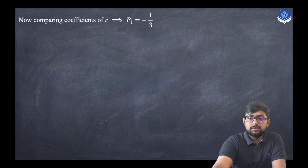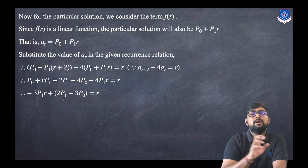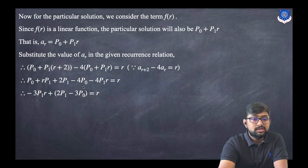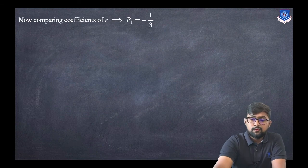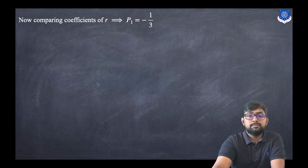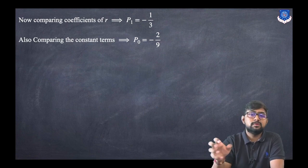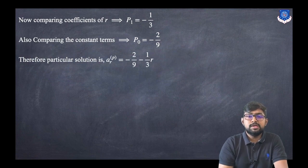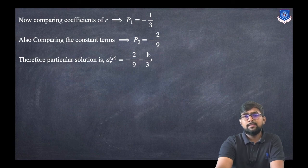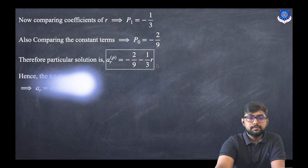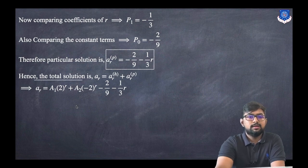Comparing coefficients: the coefficient of r on the left is −3p1 and on the right is 1, so p1 = −1/3. Comparing constant terms gives p0 = −2/9. Therefore the particular solution is a(r)_p = −2/9 − (1/3)·r. The total solution is the homogeneous solution plus this particular solution.